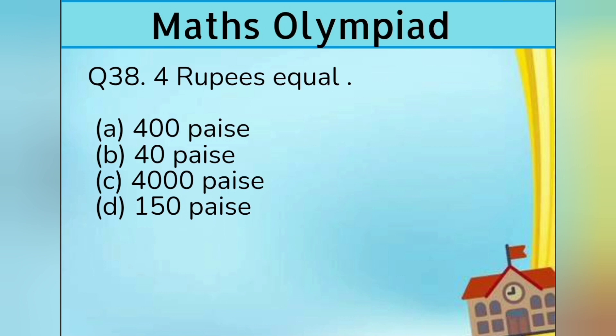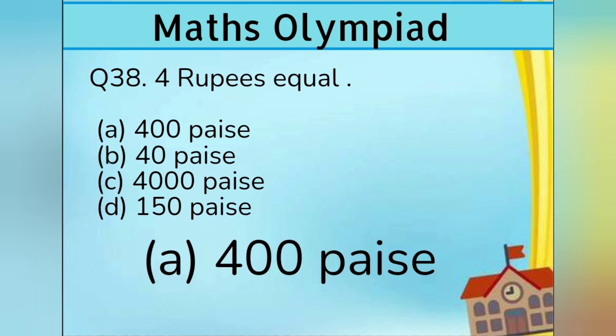Question 38. 4 Rupees equal: Option A 400 Paisa, Option B 40 Paisa, Option C 4000 Paisa, Option D 150 Paisa. Answer is Option A 400 Paisa.